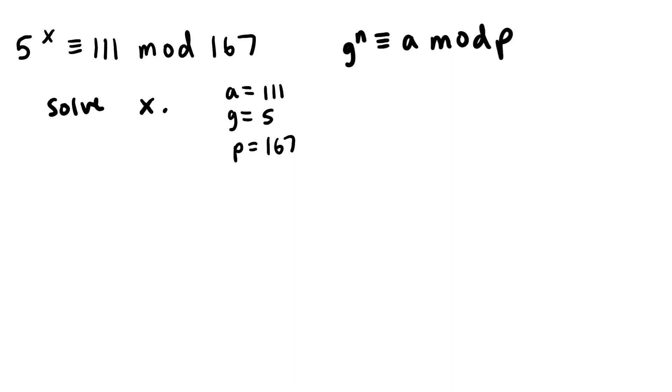And our first step, step 1, is to set a variable m, which is a new variable, that we'll set to the greatest integer of the square root of p. And in our case, p is 167, right here. So we put 167 here.